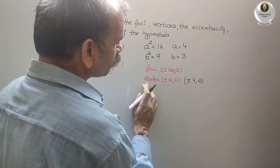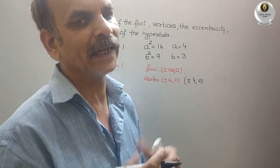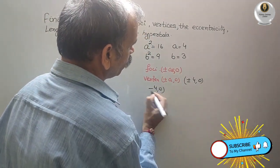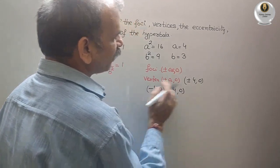So that means vertices are 2. So first we will take positive or otherwise we will take negative. So here we will get minus 4 comma 0 and we will get 4 comma 0. So these are the vertices.